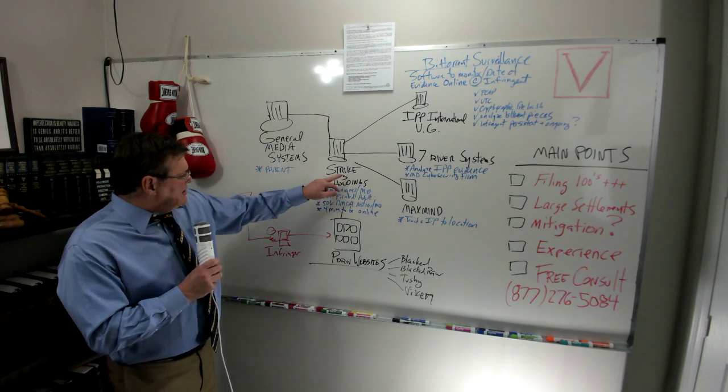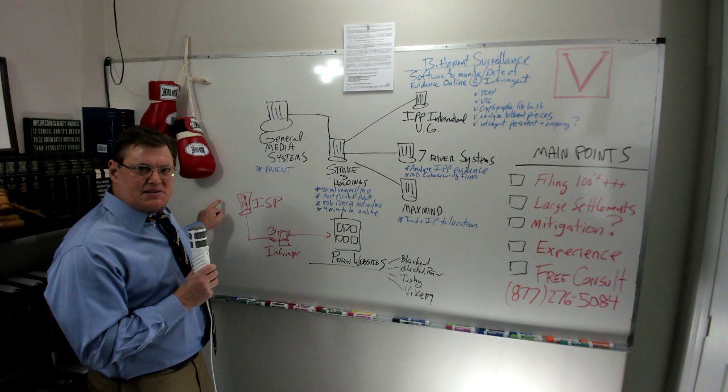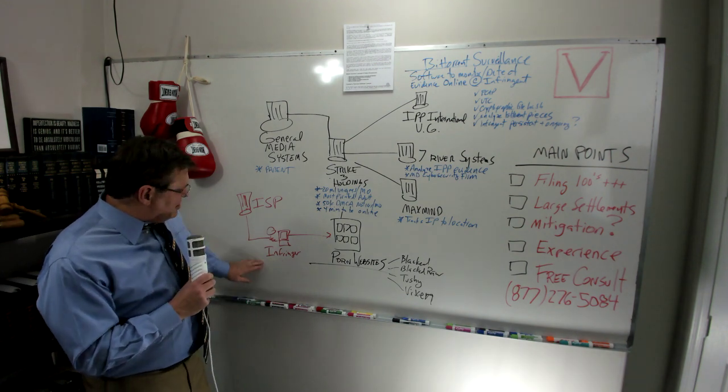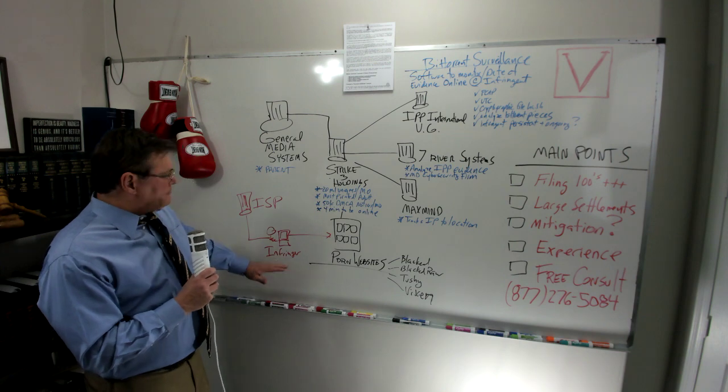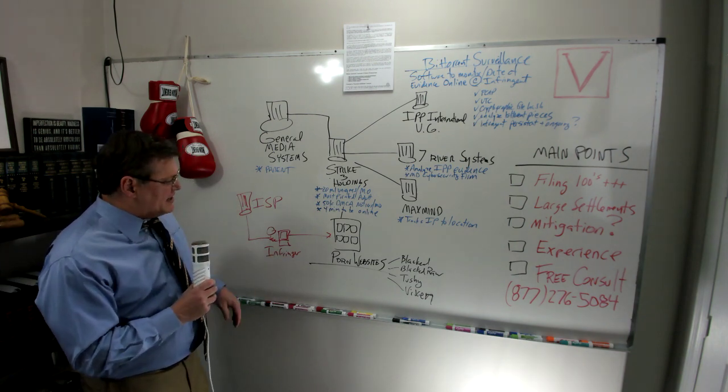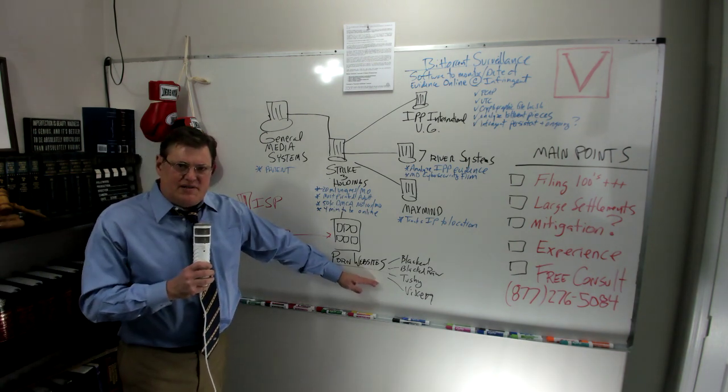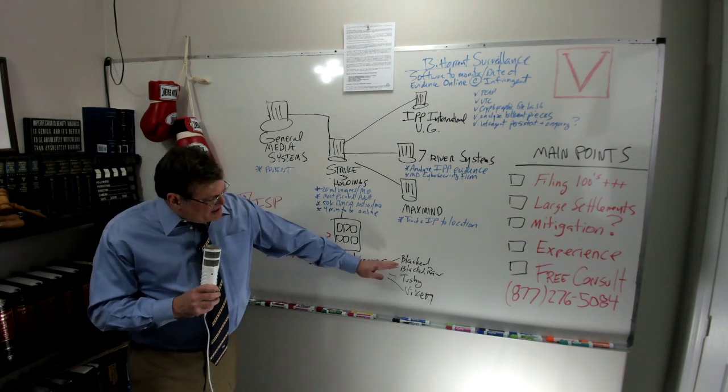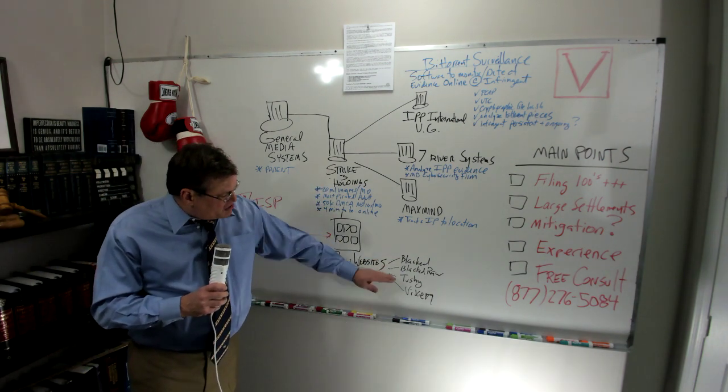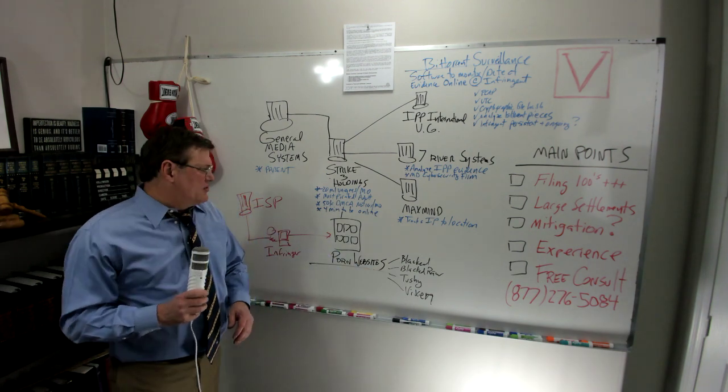This is what they like to do. They like to get the early discovery from your internet service provider. Here's our downloader here. Some may call that the infringer. You got your infringer hooked up by the ISP, logging into one of these websites of Strike Three Holdings. The main ones being Blacked, Blacked Raw, Tushy, and Vixen.